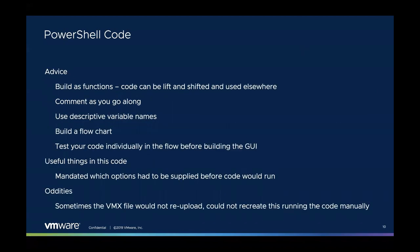Some advice to pass on about the PowerShell code: build the code as functions, and comment as you go along. There were areas where I did not comment my code, and coming back two years later to blog about it, I had to do some Googling to figure out what was going on in my head when I created it. Use descriptive variable names and test the code individually in your flow before you build the GUI. I'd say start with the script and then build the GUI on top, rather than the other way around.